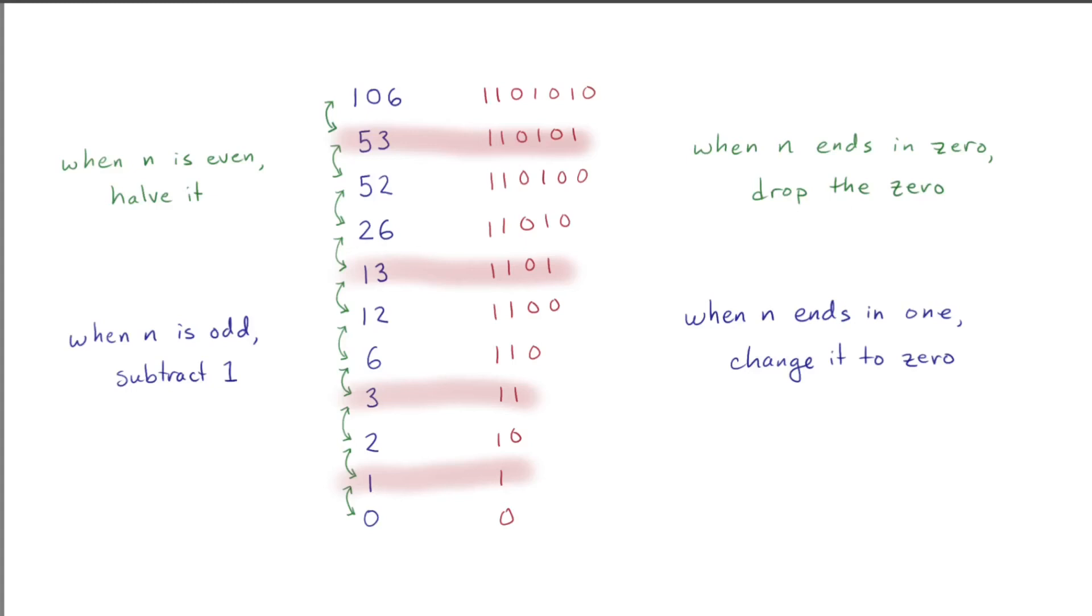So if you've written your number in binary, to unravel it, you just read the binary from right to left. If you see a zero, you drop it. That's halving. If you see a one, you change it to a zero, and then you drop it. That's subtract one and then halving.